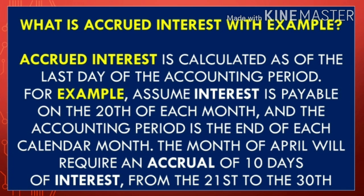Accrued interest is calculated as of the last day of the accounting period. For example, assume interest is payable on the 20th of each month and the accounting period is the end of each calendar month. The month of April will require an accrual of 10 days of interest, from the 21st to the 30th.